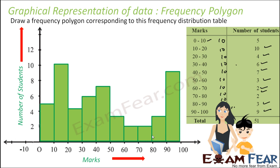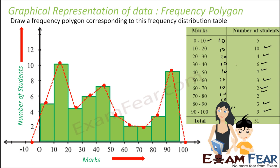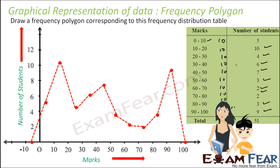Now from this, we can easily develop a frequency polygon. We will draw the midpoints of the upper side of each rectangle. We have also drawn midpoints for the pre-class and the post-class. Now we join these midpoints — once joined, what you get is a frequency polygon. We can then remove the histogram.